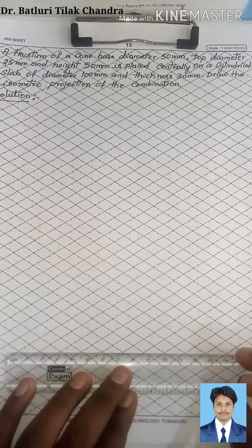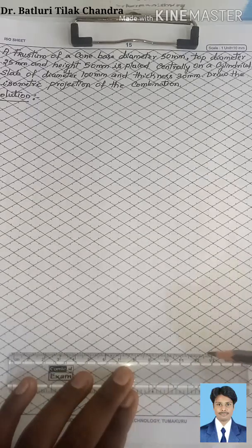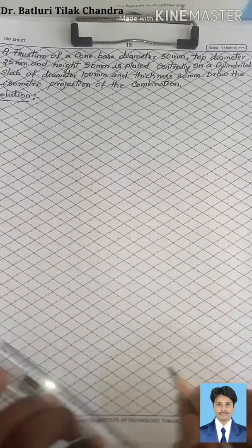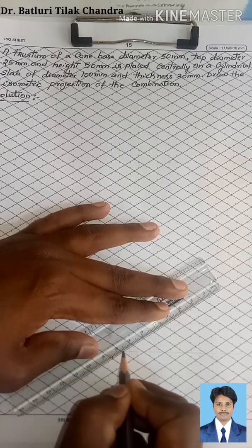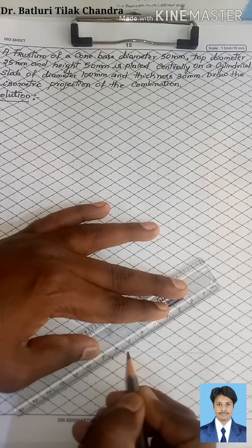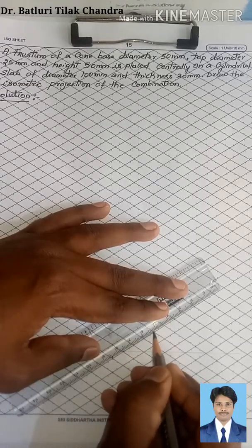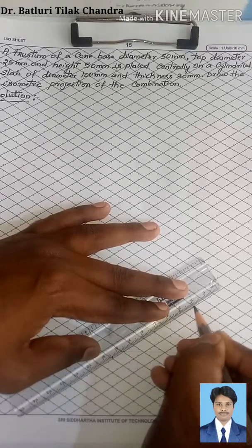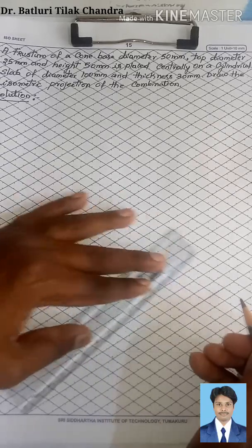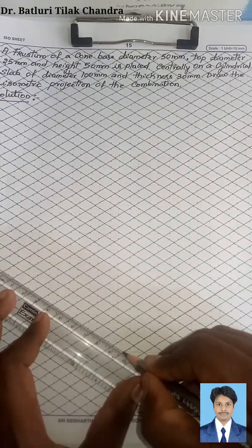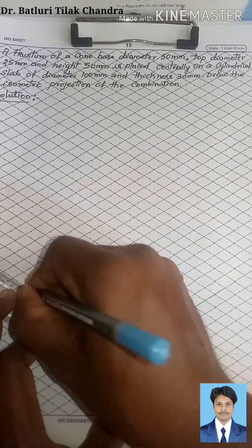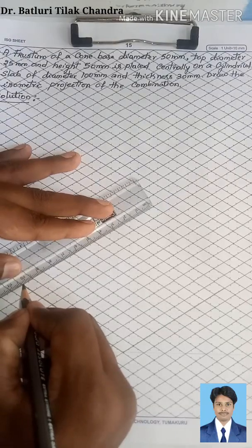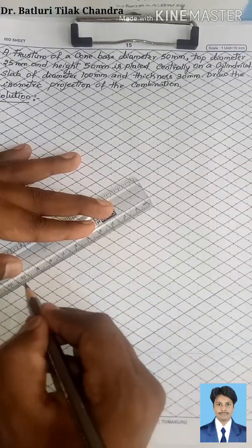Now let's do the construction. At any convenient distance draw a horizontal line with very thin lines. I will take this as the reference. From here towards the right side, the base diameter of the cylindrical slab is 100 mm — that is 10 boxes to the right, and 10 boxes to the left. From here we can find out the rhombus.